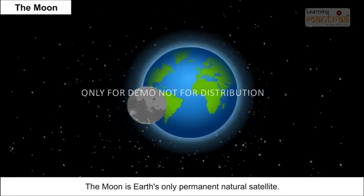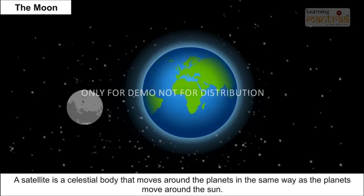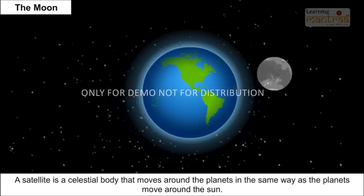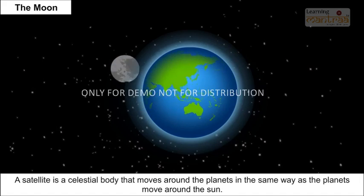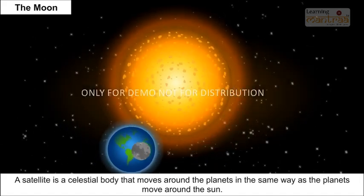The Moon is Earth's only permanent natural satellite. A satellite is a celestial body that moves around the planets in the same way as the planets move around the Sun.